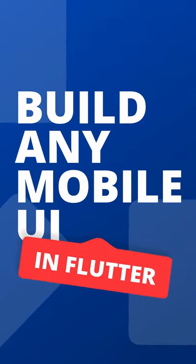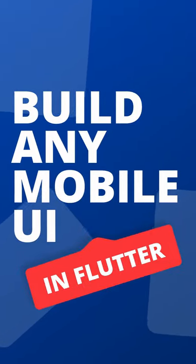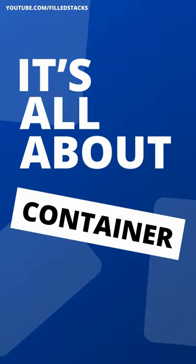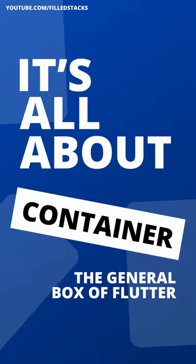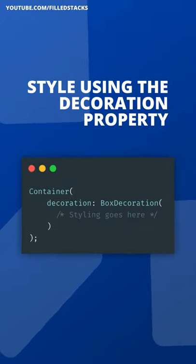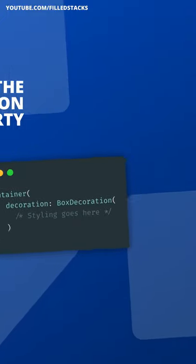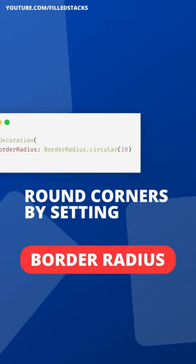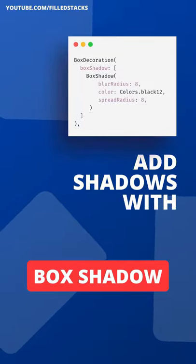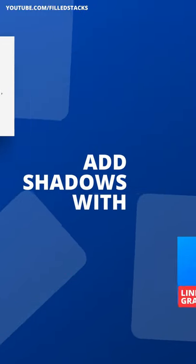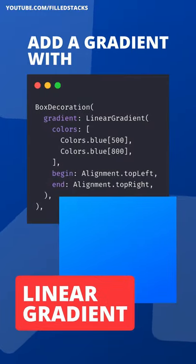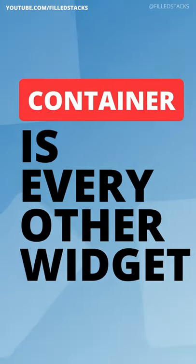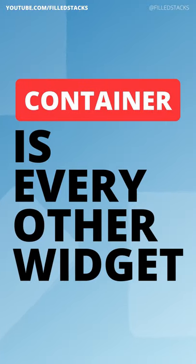So how do we build any UI in Flutter? Well, you really have to know how to use the Container. The Container is basically the box of Flutter. You can give it a decoration — in the decoration you can give it rounded corners, a box shadow which is just a drop shadow, you can even add a linear gradient, or you can just set a normal straight-up color.